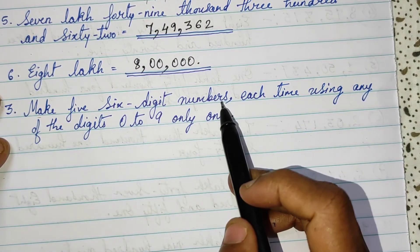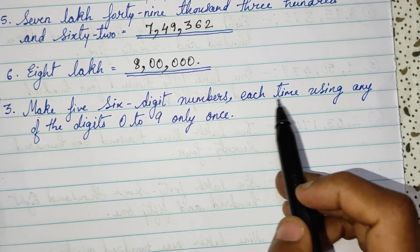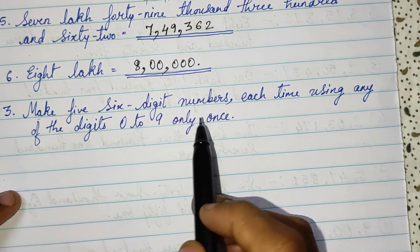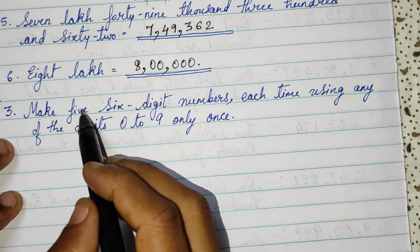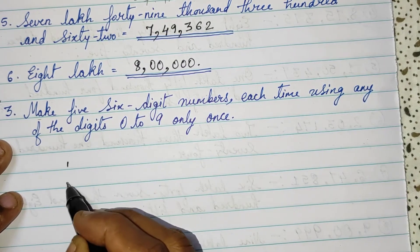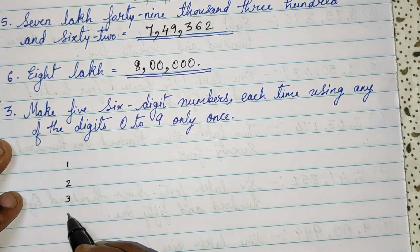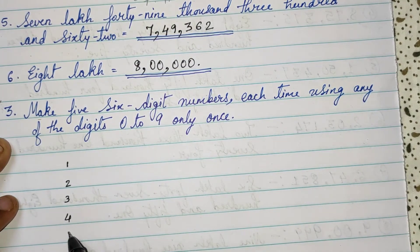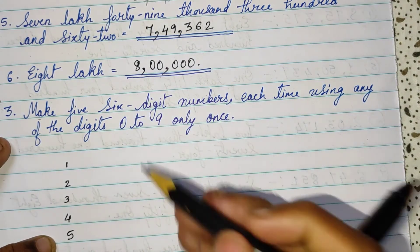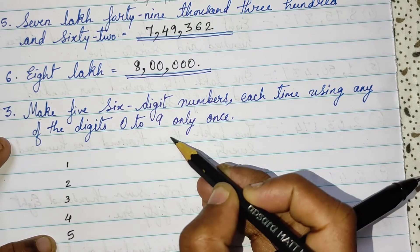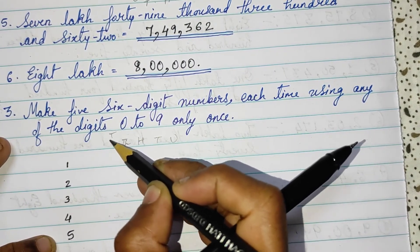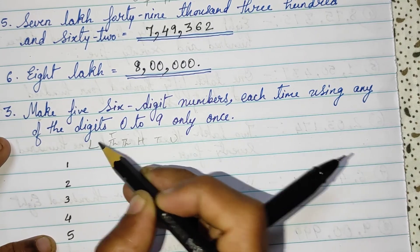Make 5 to 6-digit numbers, each time using any of the digits 0 to 9, only once. They have asked 5 — so 1, 2, 3, 4, 5 and 6-digit number. 6-digit means lakh — you need unit, 10, 100, 1000, 10,000, lakh.